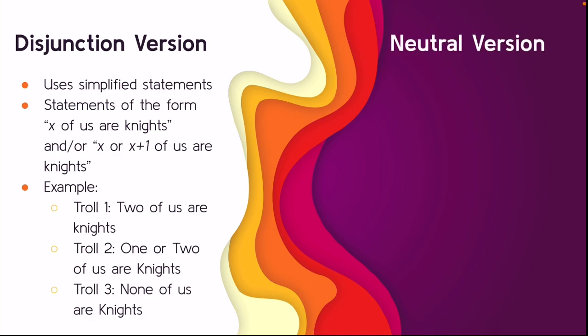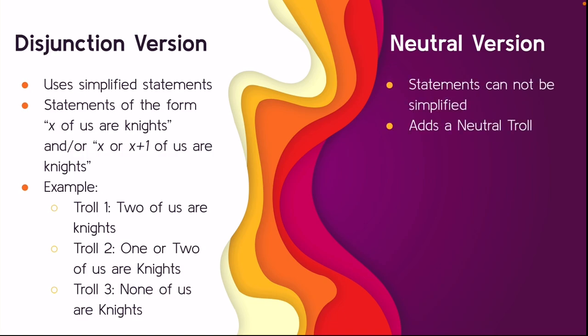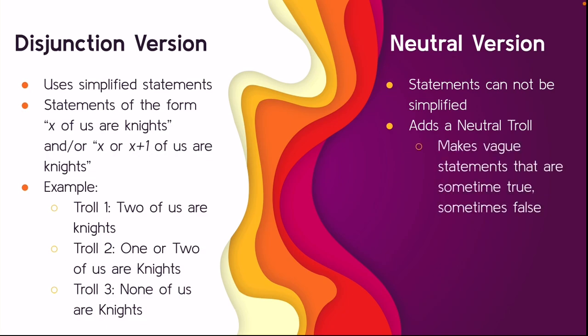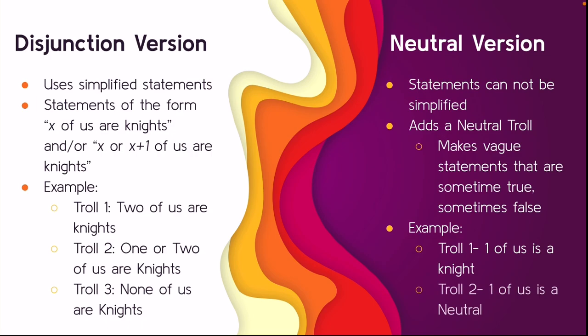Then we have the neutral version, which cannot use simplified statements. In this version, you add the possibility for a troll to be neutral — neutrals are trolls that make vague statements that are sometimes true or sometimes false. In one example, troll one says 'one of us is a knight' and troll two says 'one of us is a neutral.' The solution for this one is more complicated and could range from troll one being the only knight and troll two being a knave, to a whole mix of other things.